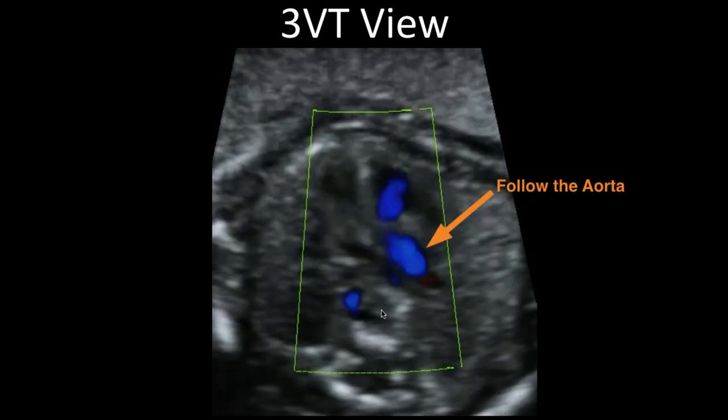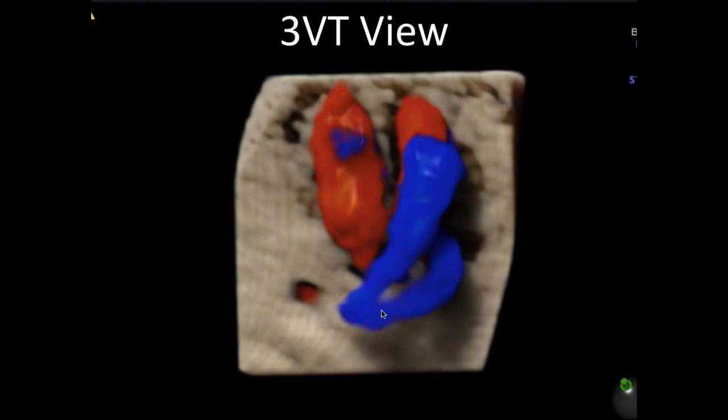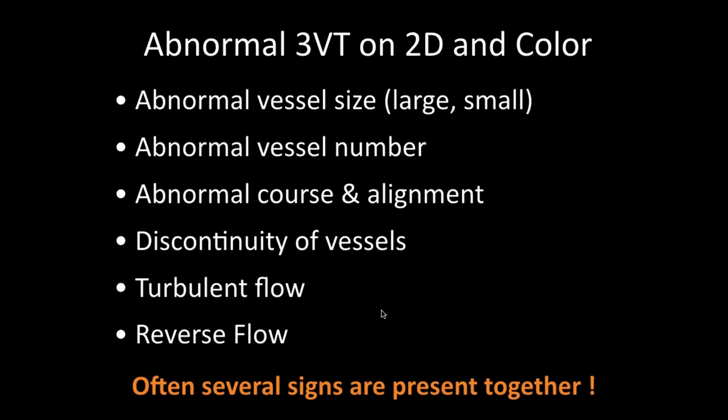Here's a 3D to show the relationship of the great vessels as they come out of the heart. We're going to look at the number of vessels — are they normal or abnormal? If they are abnormal vessel size, is the vessel large or small? Do we have abnormal numbers, abnormal course and alignment? Is one vessel discontinuous? What kind of flow do we have? Many times when you have major anomalies, there are several signs present together.